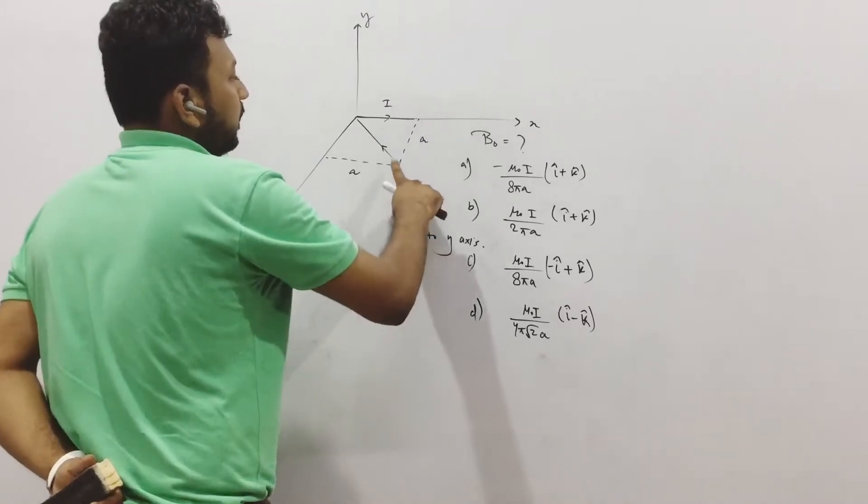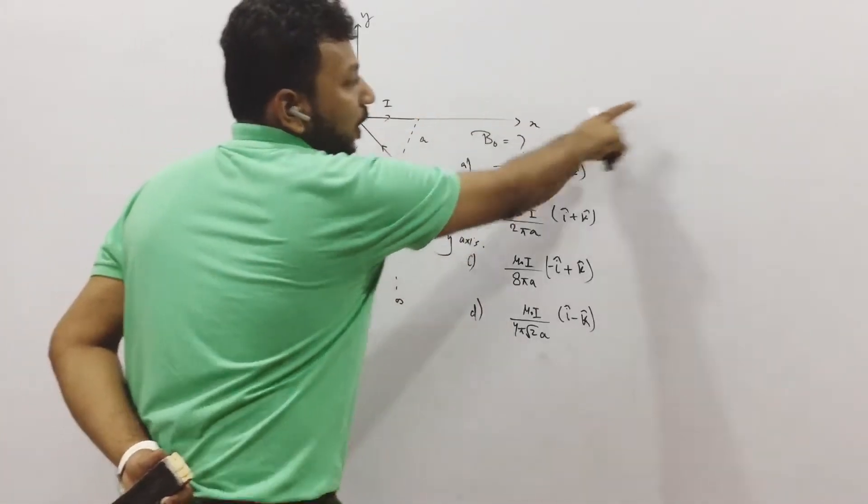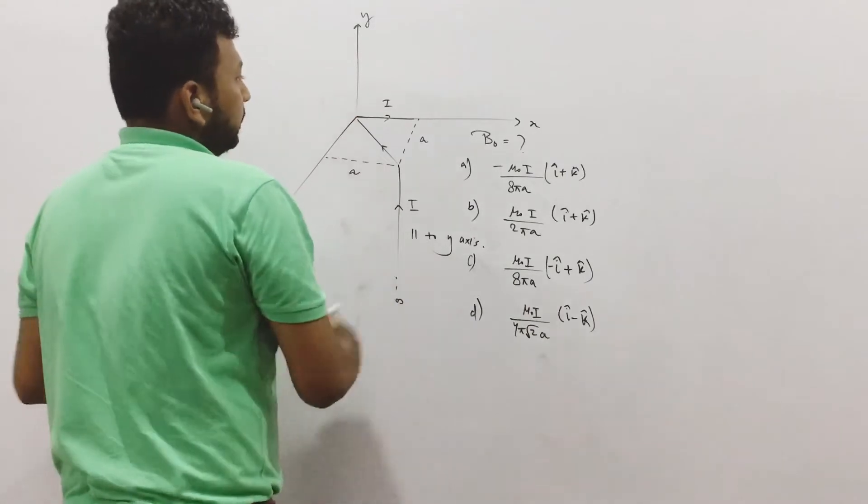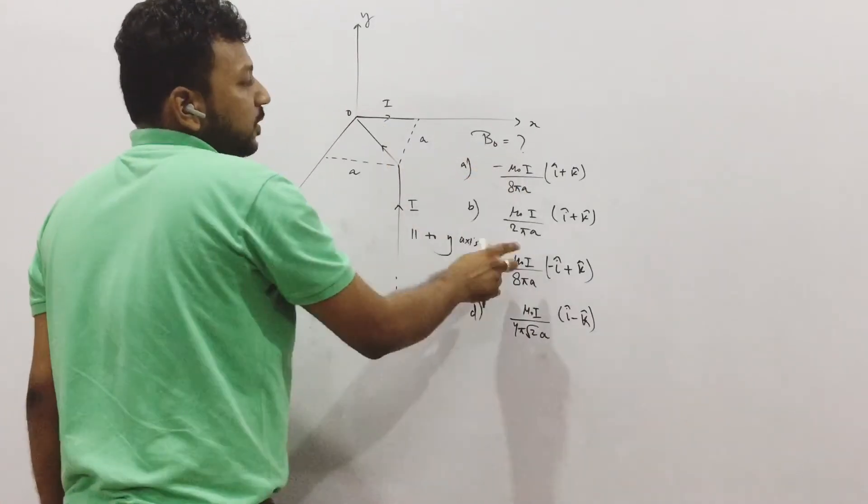The question goes like this. There is some current here, then it goes here, then it goes up to infinity. We need to find the magnetic field at origin. Magnetic field at origin, these are the options.